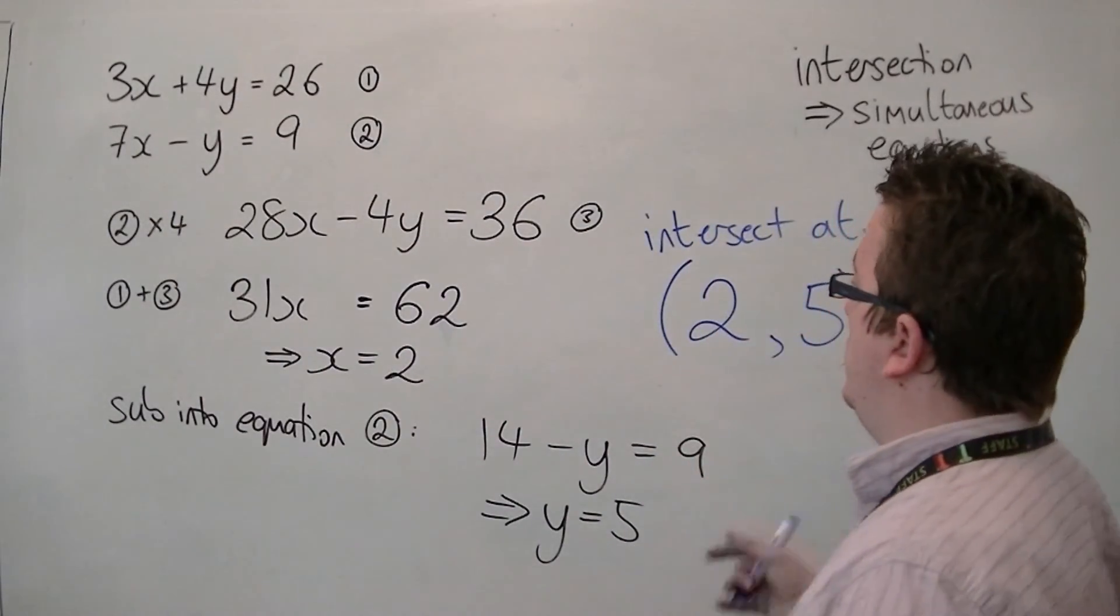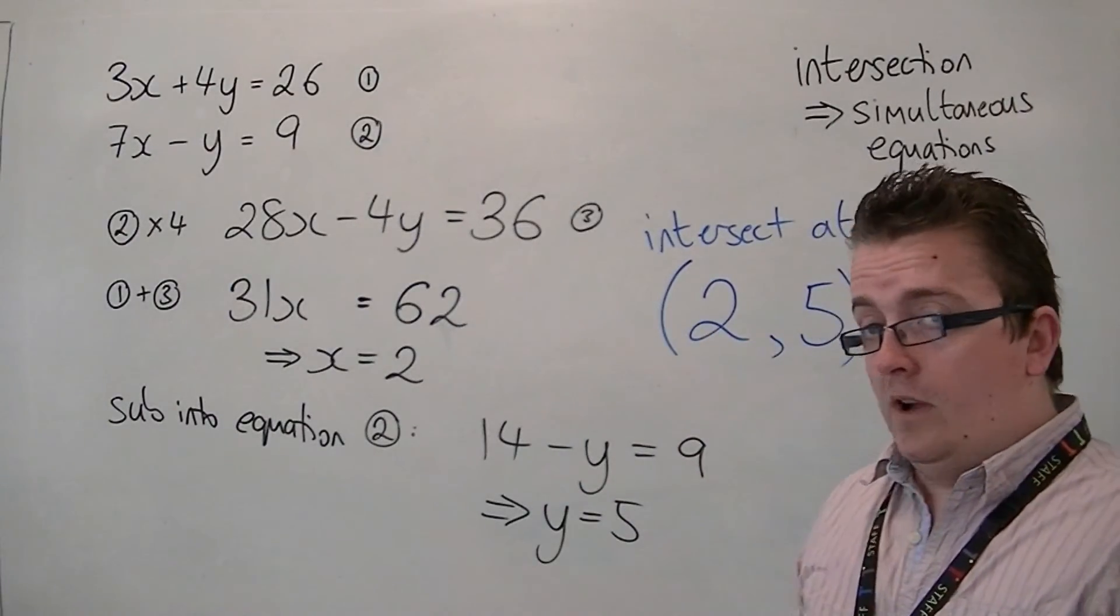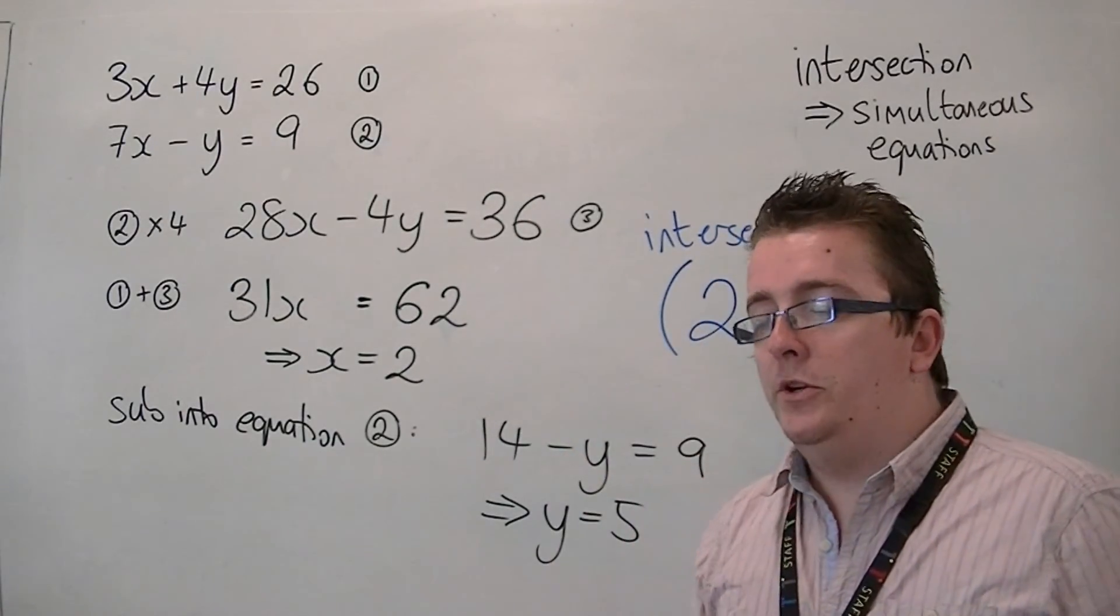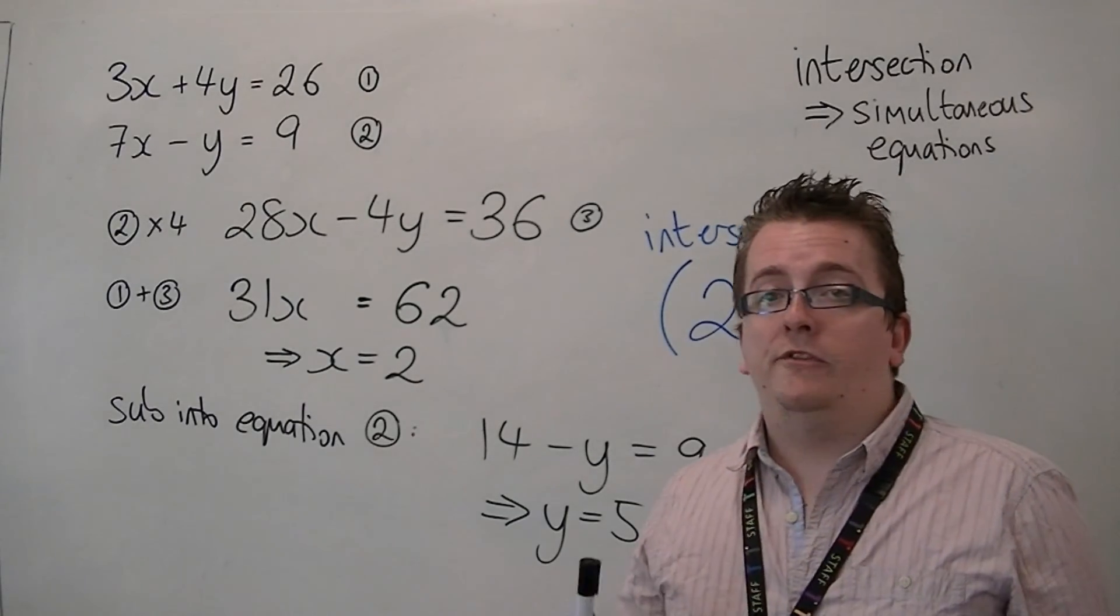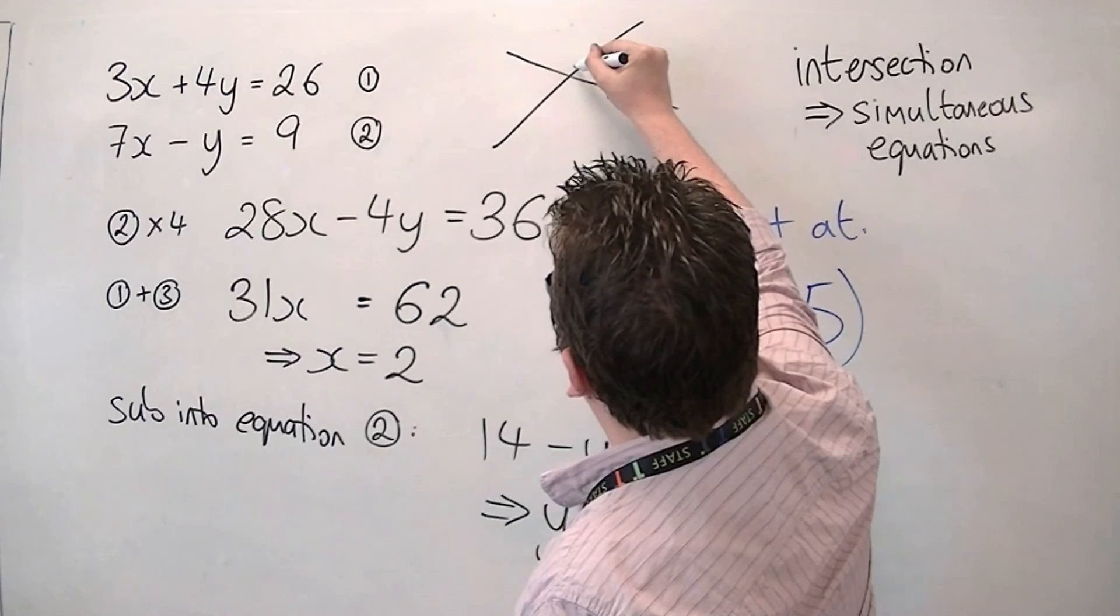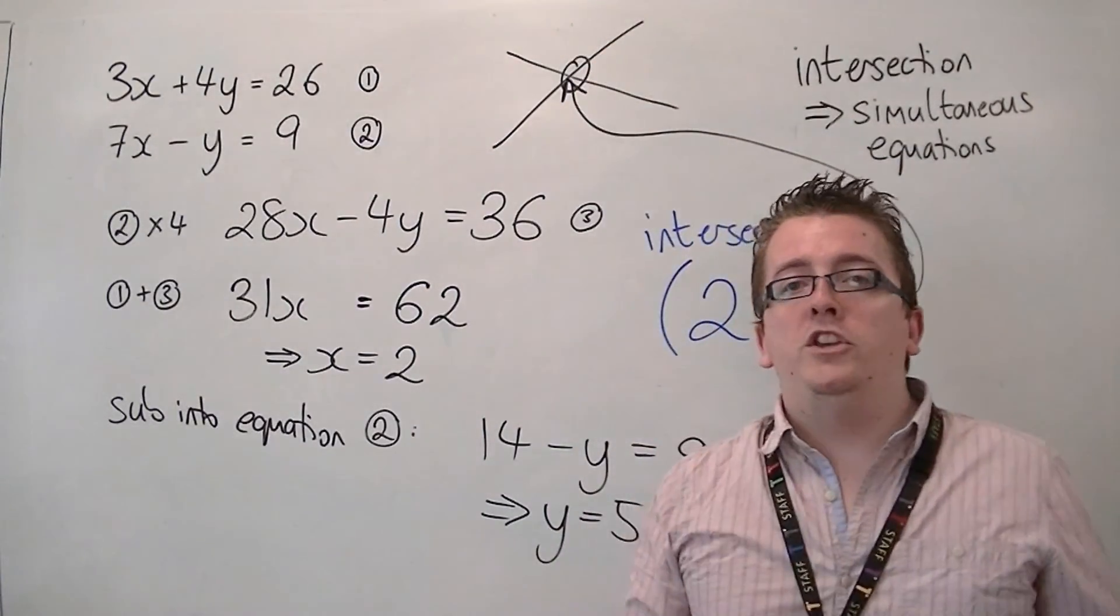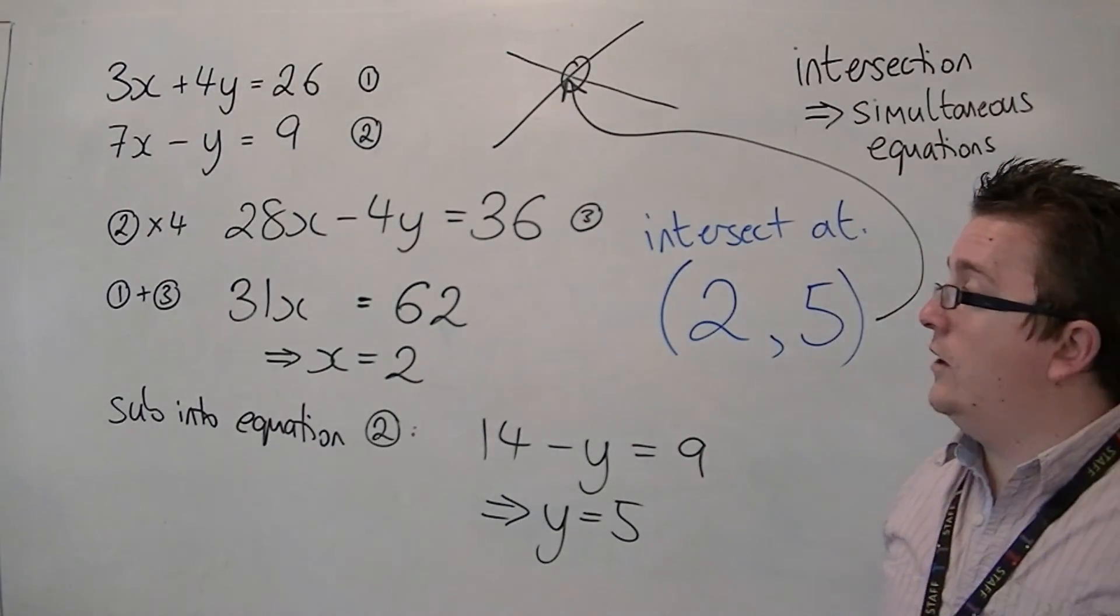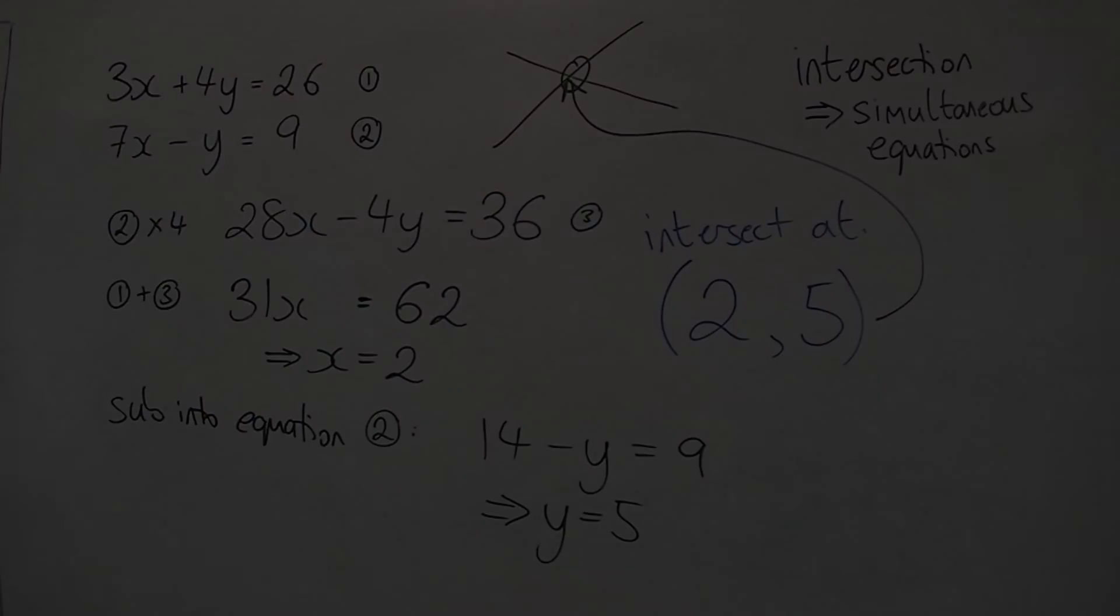Beforehand, it may well have been that you were just taught how to do simultaneous equations to work out two values x and y, but you had no actual reason as to why you were doing it. When you are doing it, you are actually trying to find where the two lines actually intersect, the actual coordinates. And that's what you've been trained to do. So in the next video, we're going to look at the substitution method.